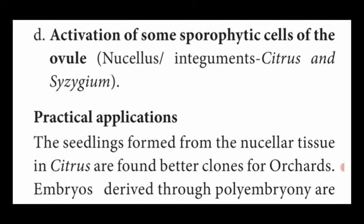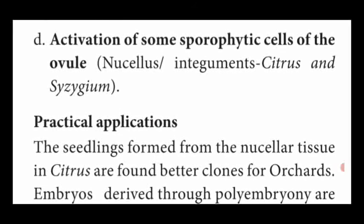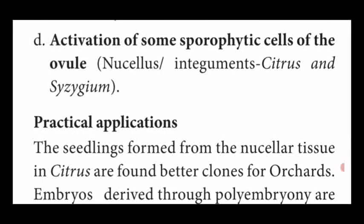The fourth type: activation of some sporophytic cells of the ovule. Some sporophytic cells - as we saw in adventive embryony - nucellus or integument - which are producing more than one embryo. This embryo is developed from either nucellus tissue or integument region of the ovule. Nucellus type - example: Citrus. Integument type - example: Syzygium. These are all the four types of polyembryony.